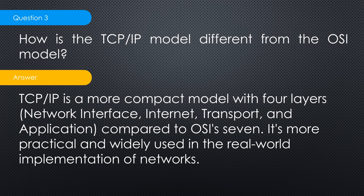Third question: how is the TCP/IP model different from the OSI model? Compared side by side, the OSI model has seven layers while TCP/IP has four layers. TCP/IP is the older one, made by the military's DARPA. It is a more compact model with four layers — network interface, internet, transport, and application — and is more practical and widely used in real-world network implementation.